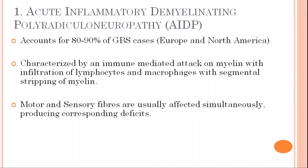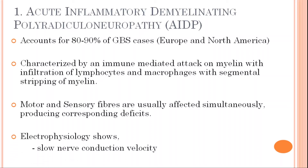Motor and sensory fibers are usually affected simultaneously, producing corresponding deficits. So in this type of GBS, both motor as well as sensory fibers are affected. The electrophysiological studies show slow nerve conduction velocity in cases of AIDP and there is a prolonged effect.